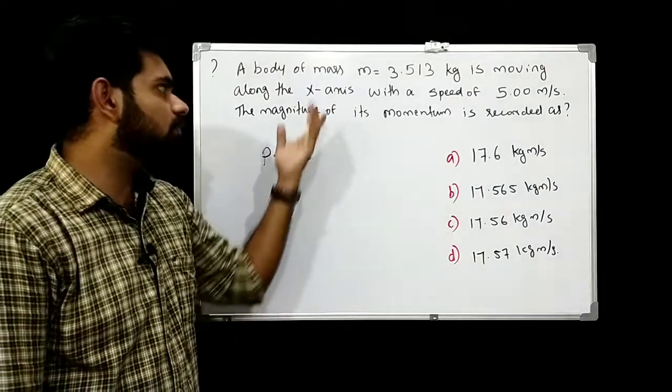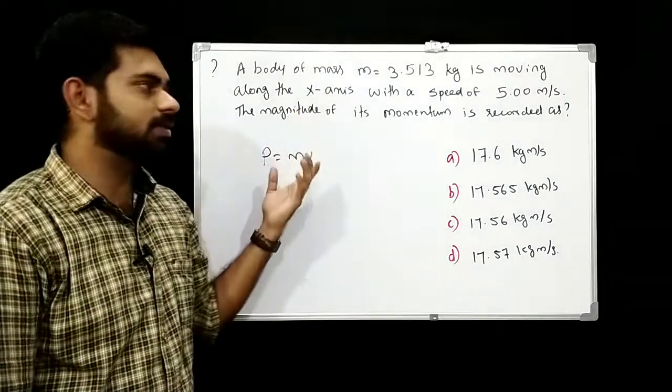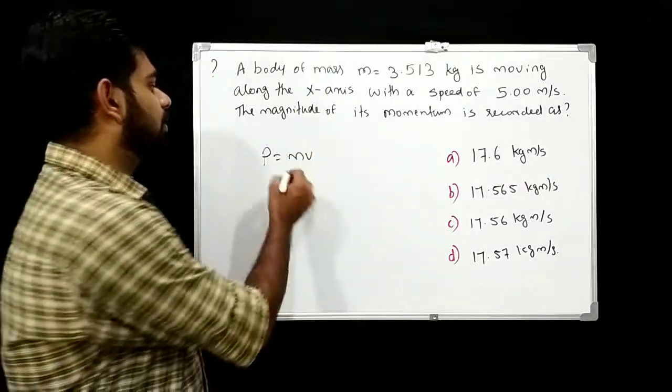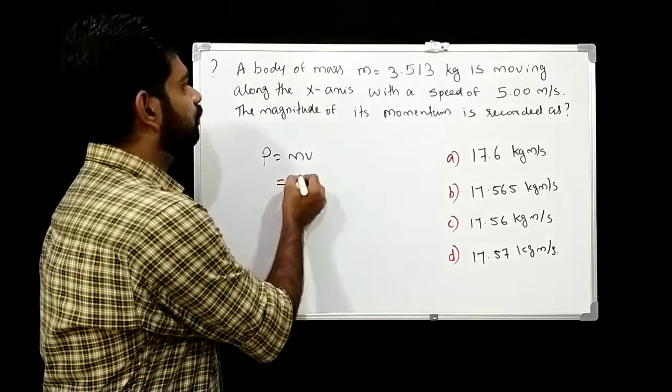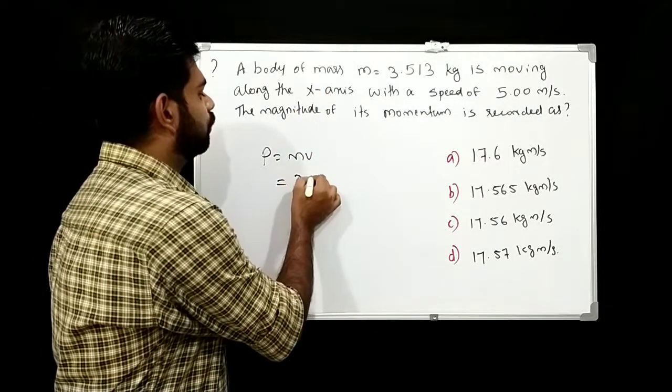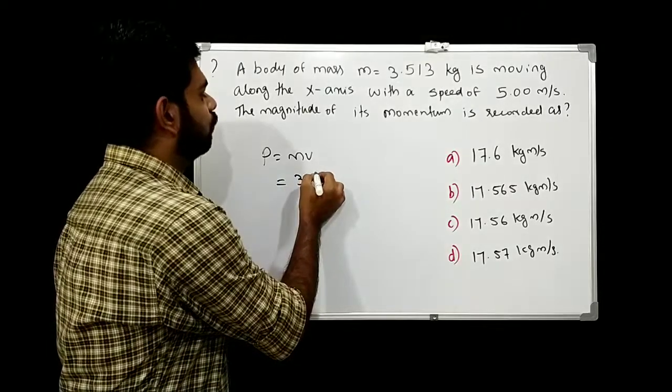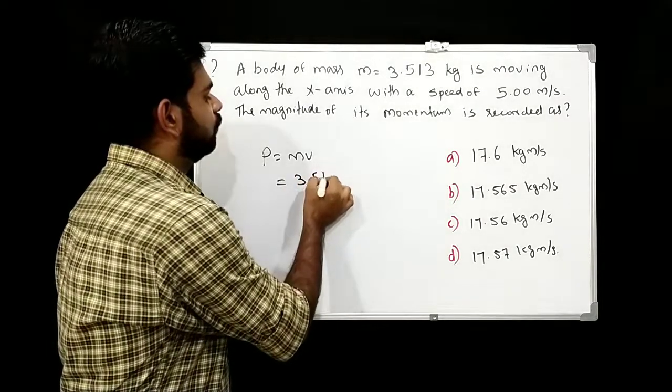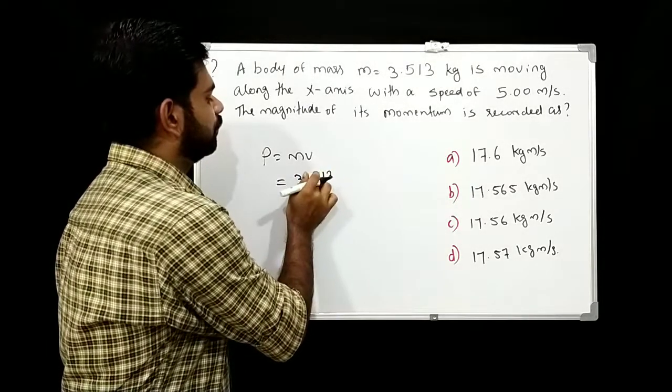So we apply P = mv. Mass is 3.513 kg, velocity is 5 m/s.